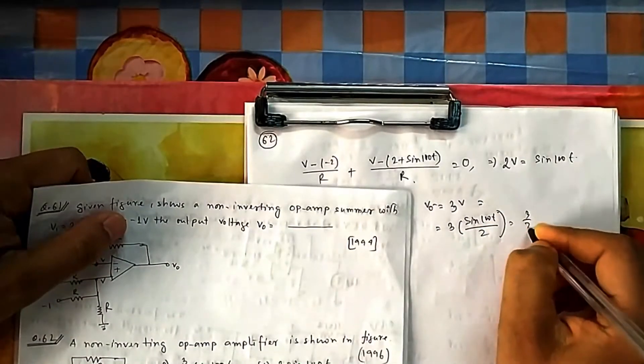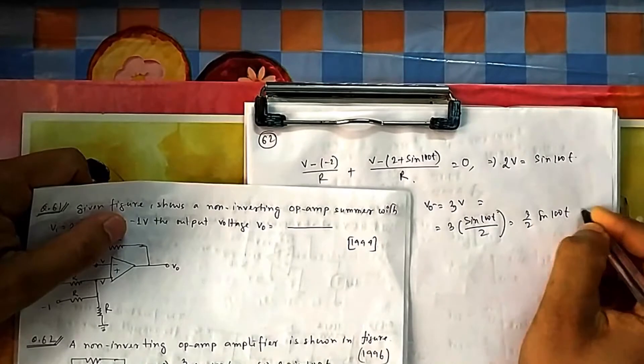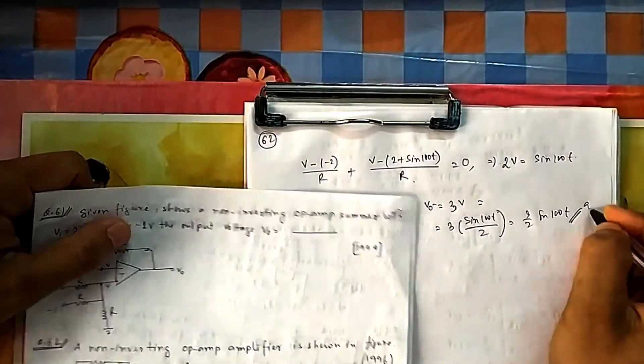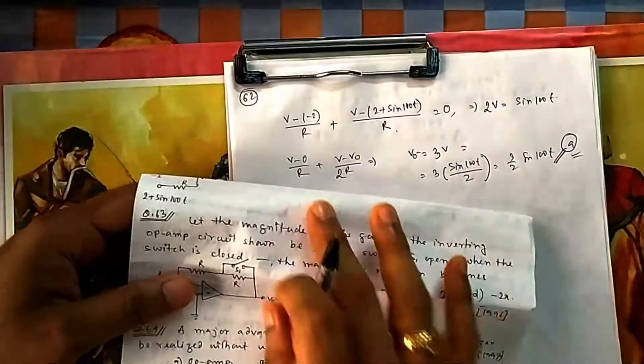Substituting V = sin(100t)/2, the output is V0 = (3/2)sin(100t), which is option A.